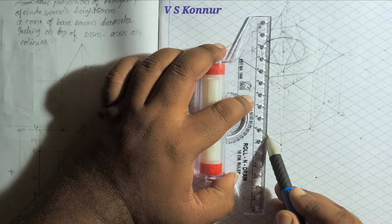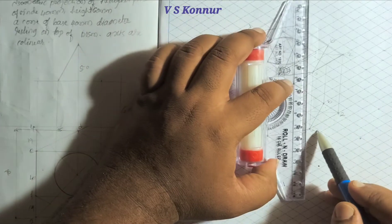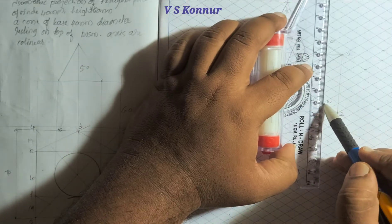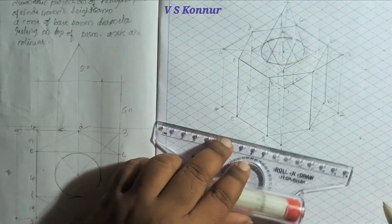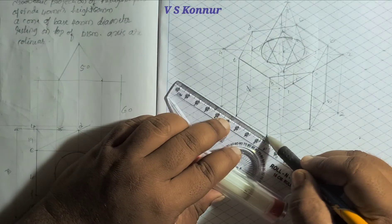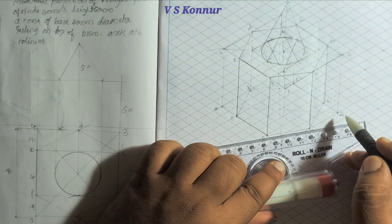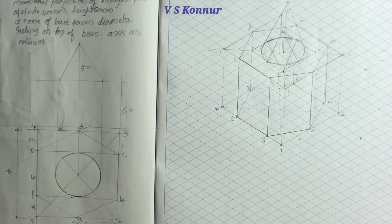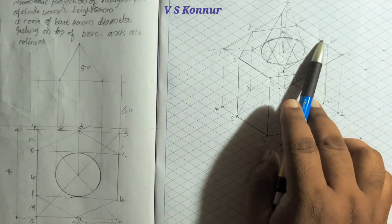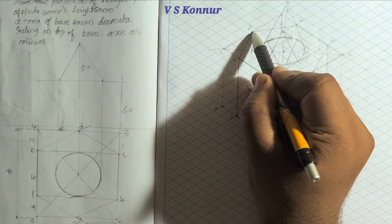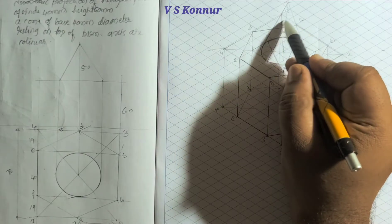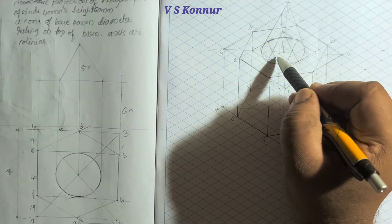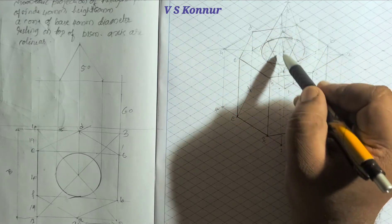Now making the visible lines darker. Lines which are visible you have to make dark. These lines are visible and should be made dark. This complete part should be dark, but here only till this point should be dark because the cone is thin. This one is overlapping the prism at this place.